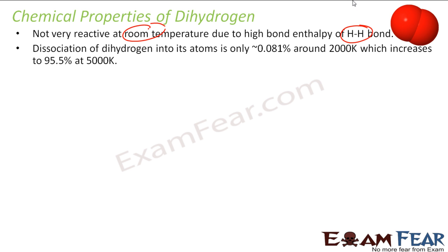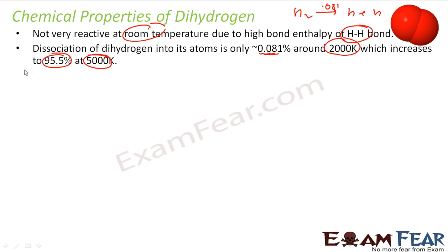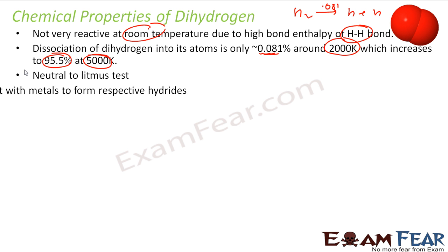At 2000 Kelvin, only 0.081 percent of H₂ will dissociate into atomic hydrogen — very, very less. But if you raise the temperature to 5000 Kelvin, almost 95–96 percent of the hydrogen gas will convert into atomic hydrogen. It is also neutral to litmus.